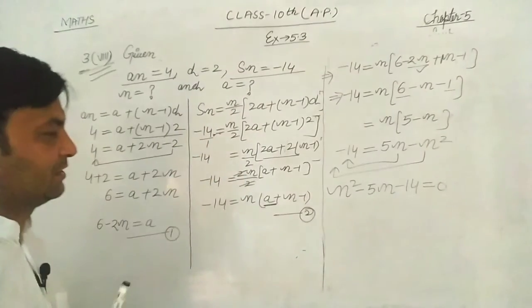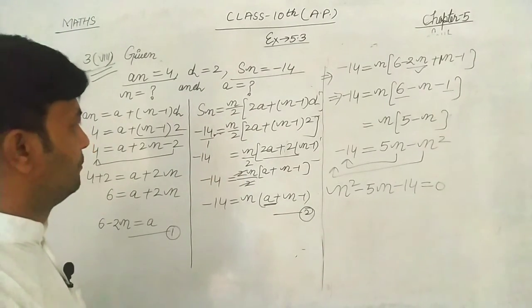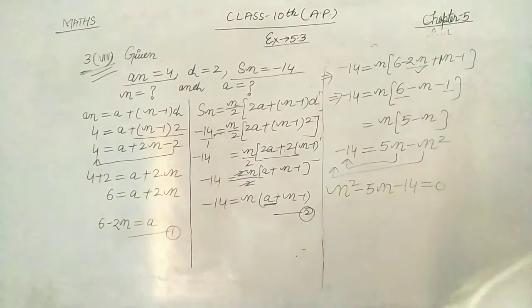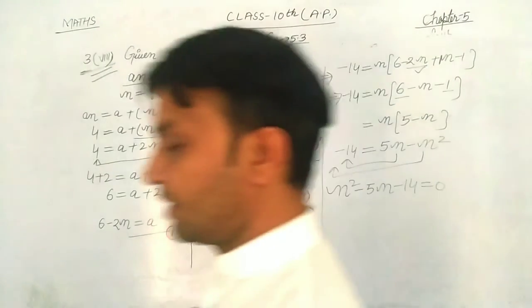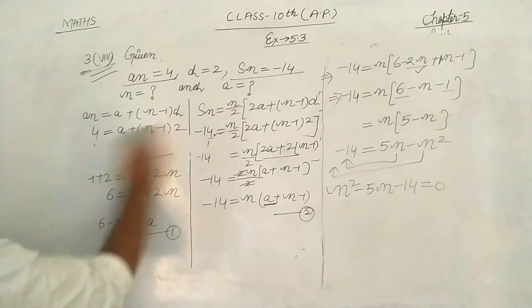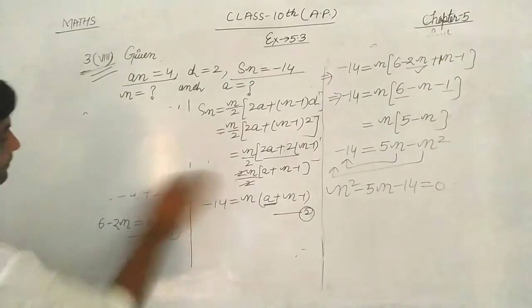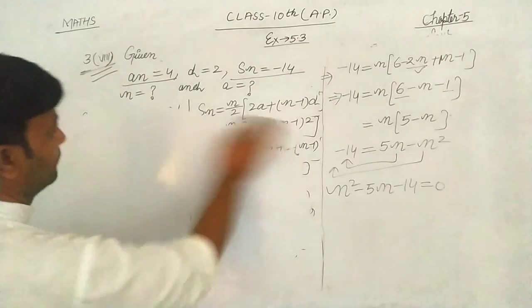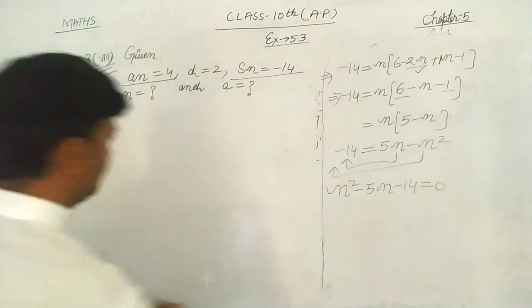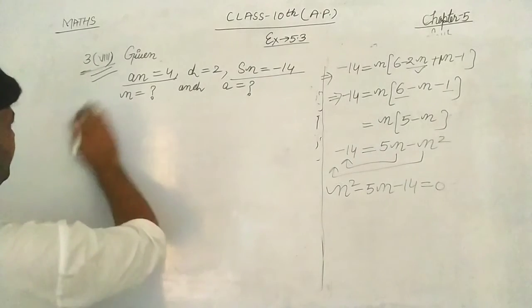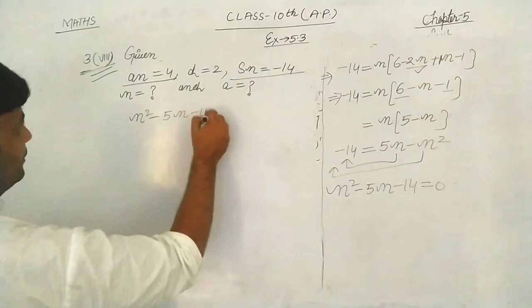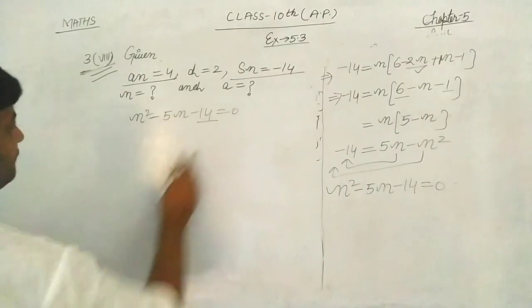We factorize n squared minus 5n minus 14 equals 0. Finding factors of 14 that subtract to give 5: we use 7 and 2. Writing: n squared minus 7n plus 2n minus 14 equals 0.